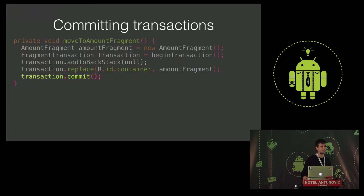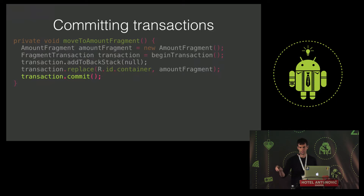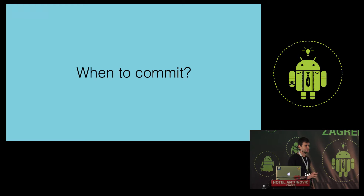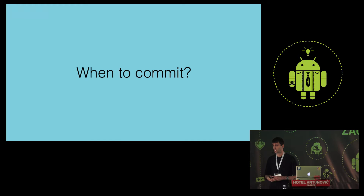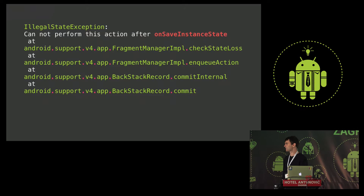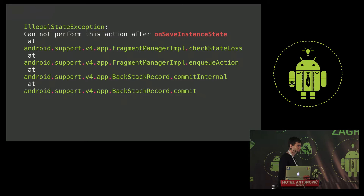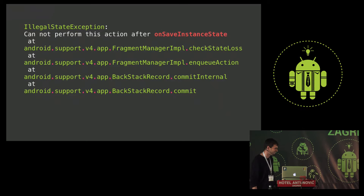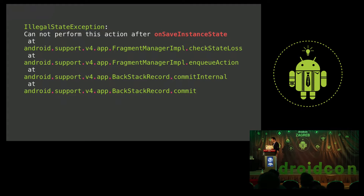Committing a transaction schedules it to run on the UI thread — it doesn't happen inline in the code, it happens in the next run of the UI thread. This is something that probably happened to some of you: you build an app, test it thoroughly, test rotation, deploy to the Play Store, and then after a few days you get crash reports: IllegalStateException — cannot perform this action after onSaveInstanceState. Who here got this exception?